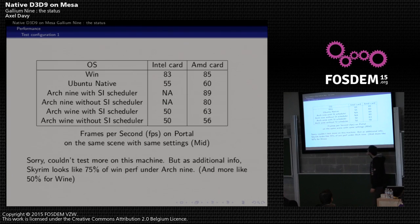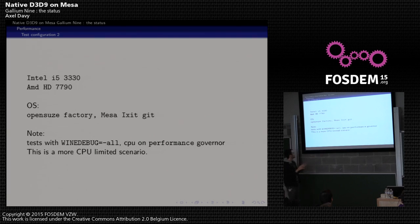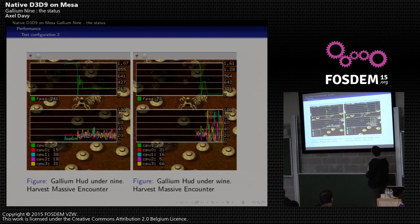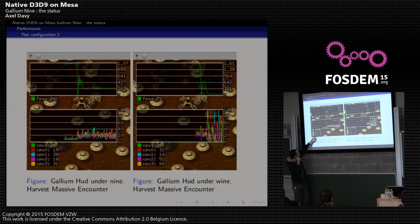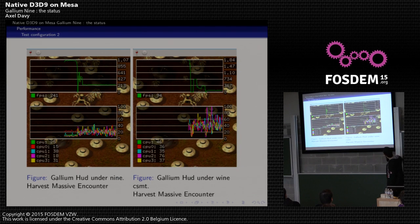For Skyrim, I get roughly three-quarters of Windows performance with Nine and about fifty percent with Wine. The second test configuration is more CPU-limited — not a laptop, CPU at performance governor. Here is the Gallium HUD showing frame rate and CPU usage during gameplay. For one particular game with Nine, we see much smoother and lower CPU usage, and much higher FPS than Wine. Comparing to Wine CSMT — the command stream optimization that offloads CPU work to one thread — we still have lower CPU usage and better performance.